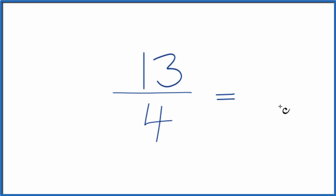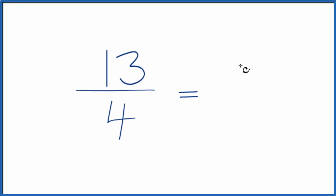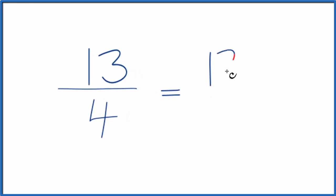To do that, we need to find a common factor, something that goes into 13 and 4 evenly. The thing is, the only thing that goes into both 13 and 4 evenly is 1. So we divide 13 by 1, we get 13. We divide 4 by 1, we get 4.